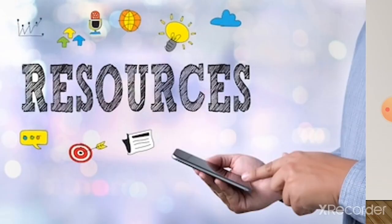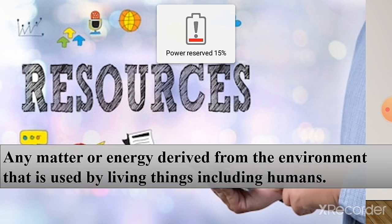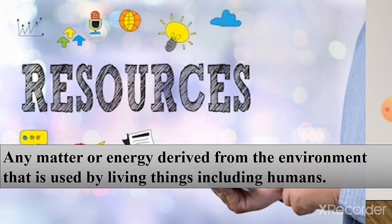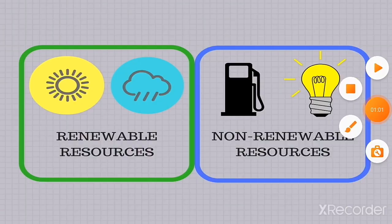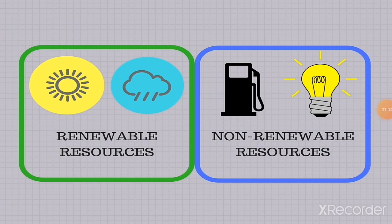Before entering into the lesson, let us recall our previous portion. What are resources? Resources is any matter or energy derived from the environment that is used by living things including humans. Resources means the material which is taken from the earth and is useful to human beings. Resources are classified into two major groups: one is renewable resources, another one is non-renewable resources. Renewable means it can be produced within a short period; non-renewable means it takes a long period to replace those minerals in the earth.